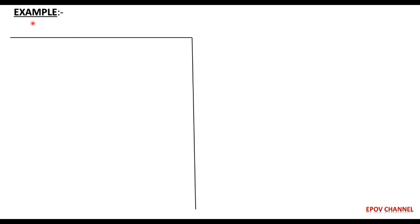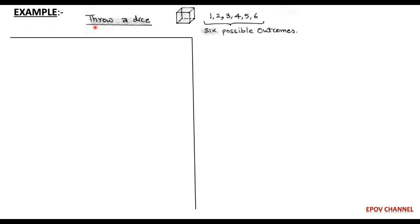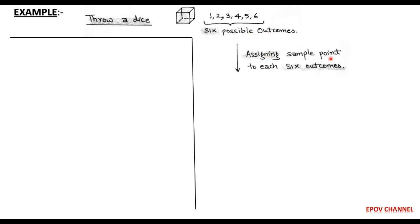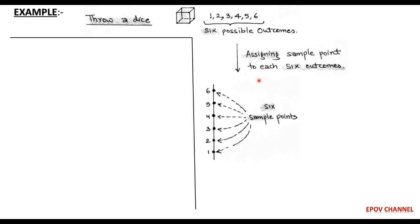To understand the concept of events, we take an example of throwing a dice. When we throw a dice, we may get 6 possible outcomes: 1, 2, 3, 4, 5, 6. Corresponding to these 6 possible outcomes, we assign 6 sample points. Also, we can arrange these 6 sample points in one-dimensional space along a straight line in increasing order. The combination of all sample points constitutes a one-dimensional sample space denoted by capital S.